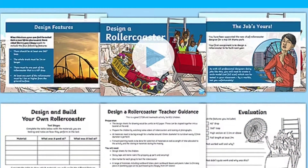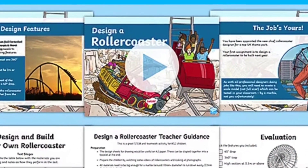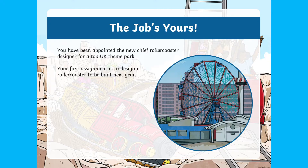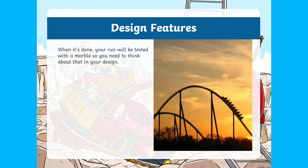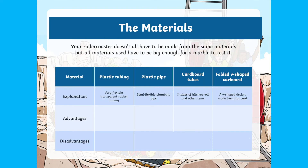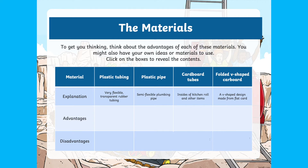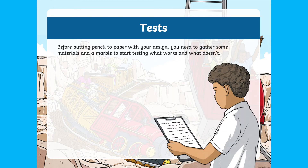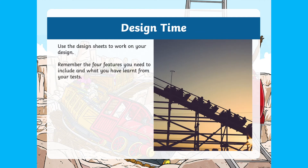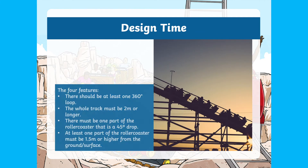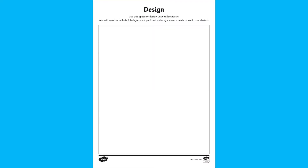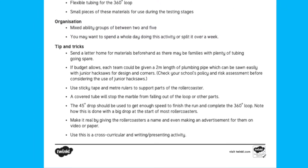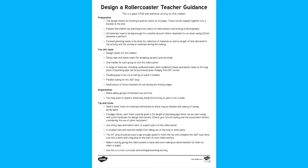This resource pack gives you the opportunity to support your child in a fun DT project, from planning and designing a scale model of a roller coaster to testing it with a marble. It looks at the advantages and disadvantages of using different materials, the different things to think about while testing it, and four features that must be included in the design. This pack also comes with design sheets and teacher guidance, including the resources you will need and some top tips and tricks to support you along the way.